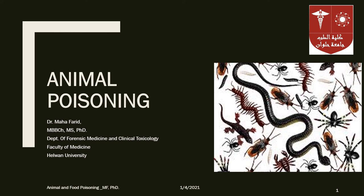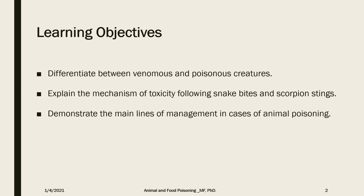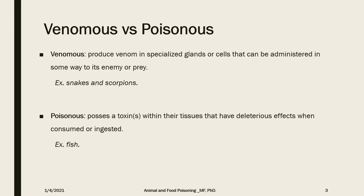Hello dear students, welcome to another lecture in clinical toxicology. In this video we will be talking about animal poisoning. First, we need to differentiate between two terms: venomous versus poisonous. Venomous animals produce venom in specialized glands or cells that can be delivered to the enemy or their prey. Poisonous means the toxin is inside the tissues and toxicity is delivered through consumption or injection of those toxic tissues. Examples of venomous creatures are snakes and scorpions, which will be the focus of today's lecture. Poisonous examples include poisonous fish.